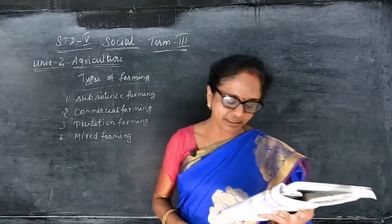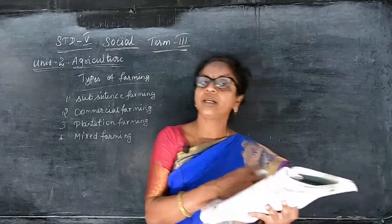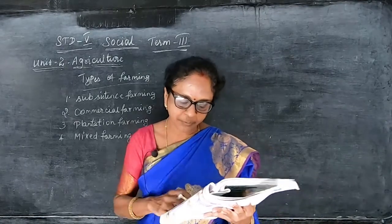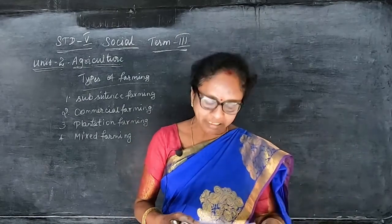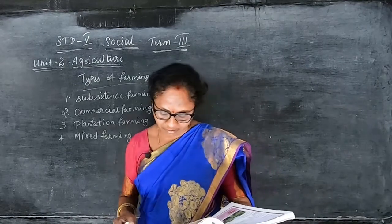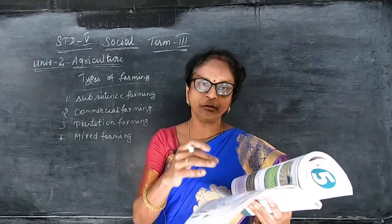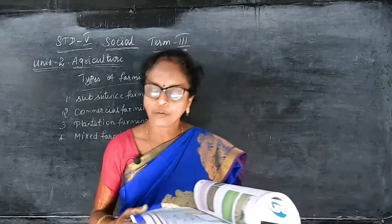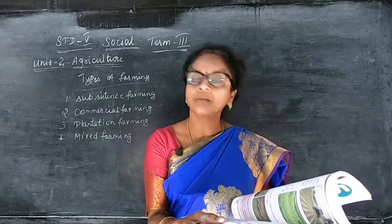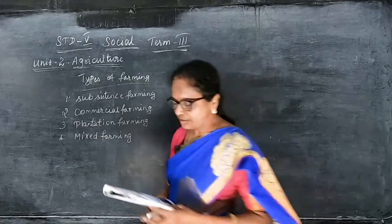The government has set up agencies like the Food Corporation of India, which purchases farm products from farmers directly at reasonable rates. To eliminate middlemen between farmers and consumers, the government of Tamil Nadu introduced a new concept called Uzhavar Sandhai, where farmers can directly go and sell their produce.